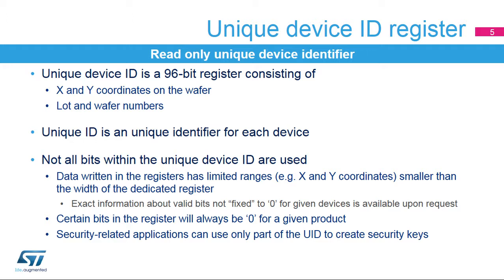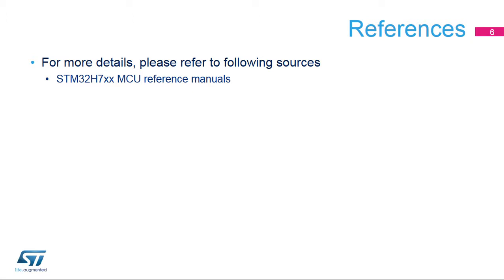As each record within the unique identifier has a given range, like the X and Y coordinates, not all the bits in the device ID are used. This is important for security-related purposes, where the number of bits used is an important parameter. Such security applications can only use part of the device ID and should avoid using the fixed bits. For detailed information, please refer to the device's reference manuals and data sheet.